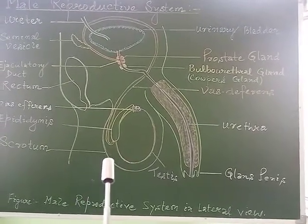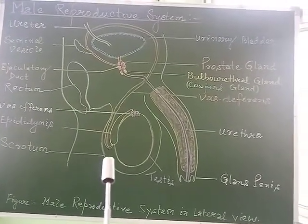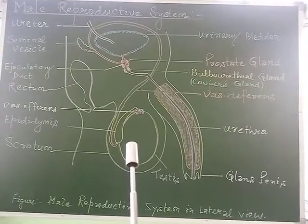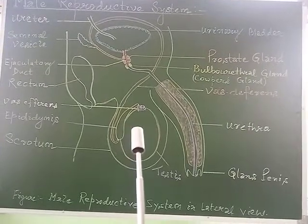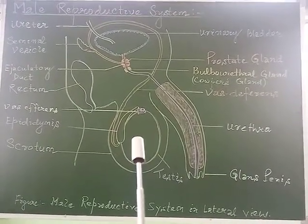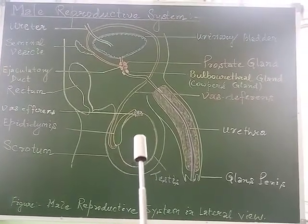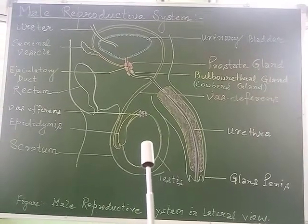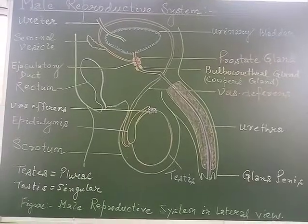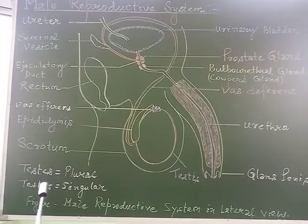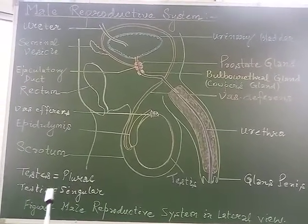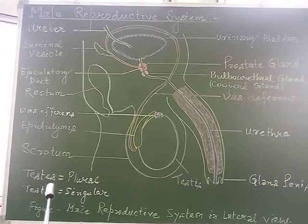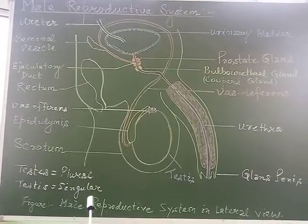The scrotum is a pouch-like loose fold of skin arising from the lower abdominal wall and hanging between the legs. It provides around 2 to 2.5 degrees Celsius lower temperature than body temperature so that sperms can be produced efficiently. The testis is responsible for forming sperms — the male gametes — and also releases the main male hormone, testosterone. Note: 'testes' is the plural form, while 'testis' is singular.